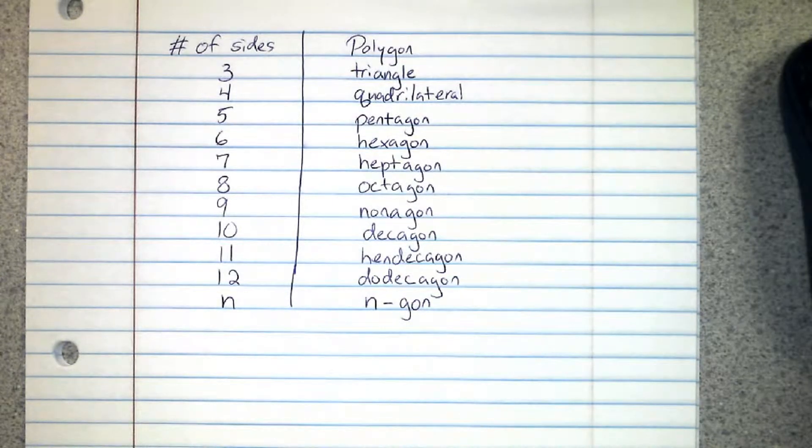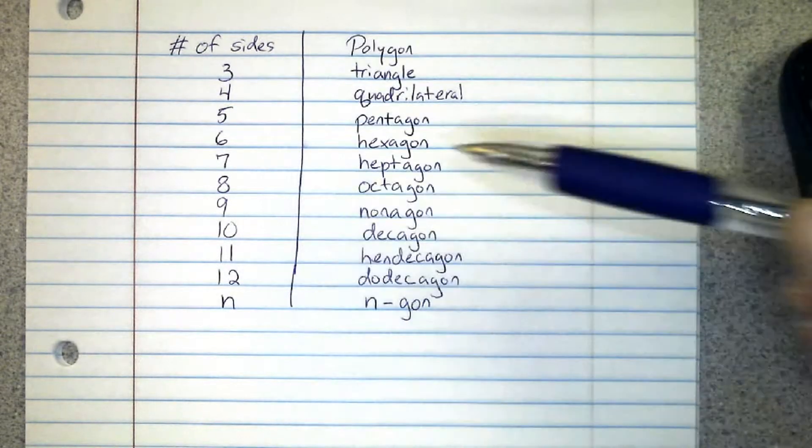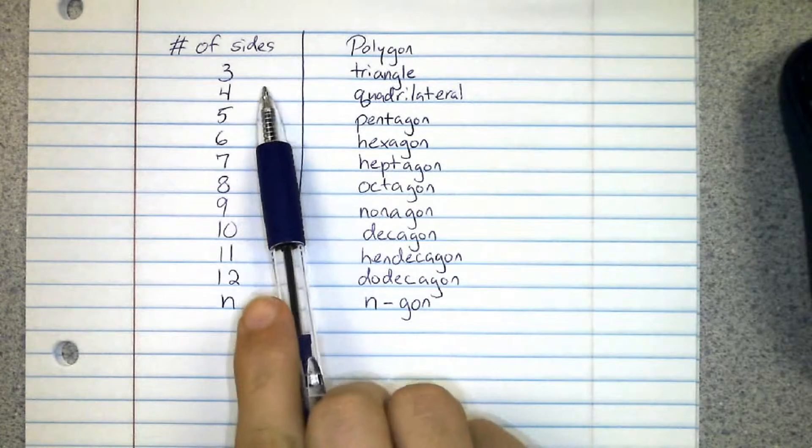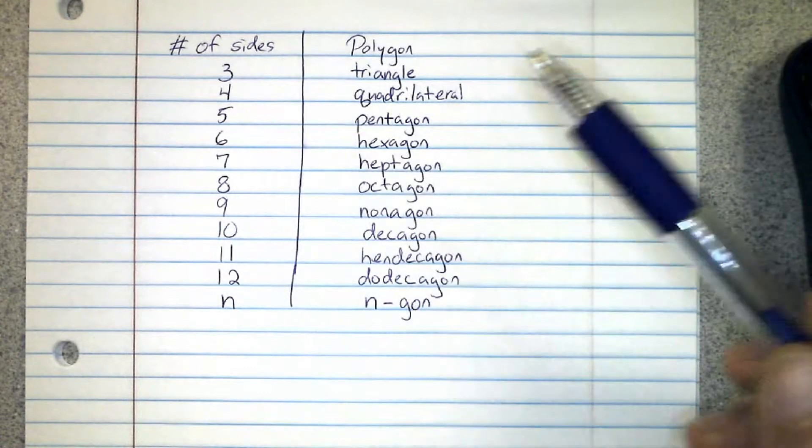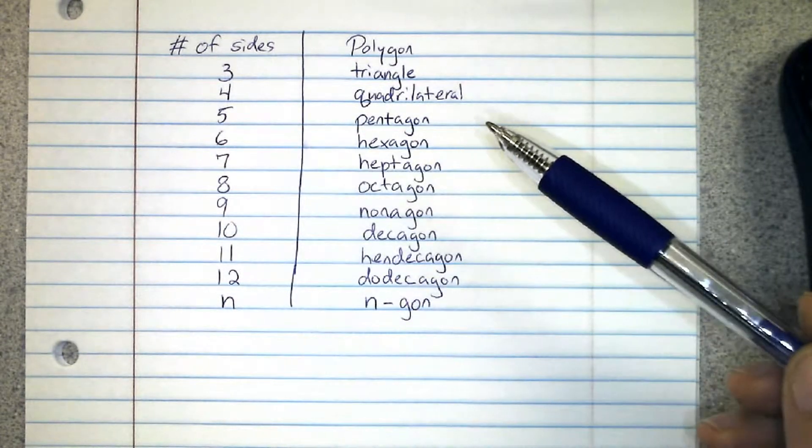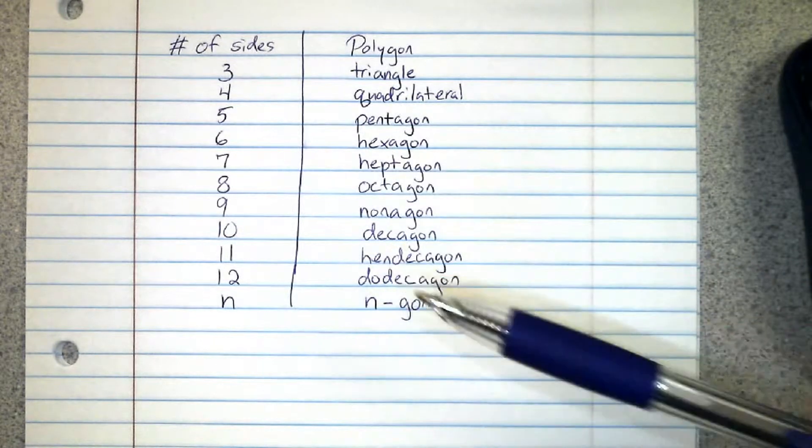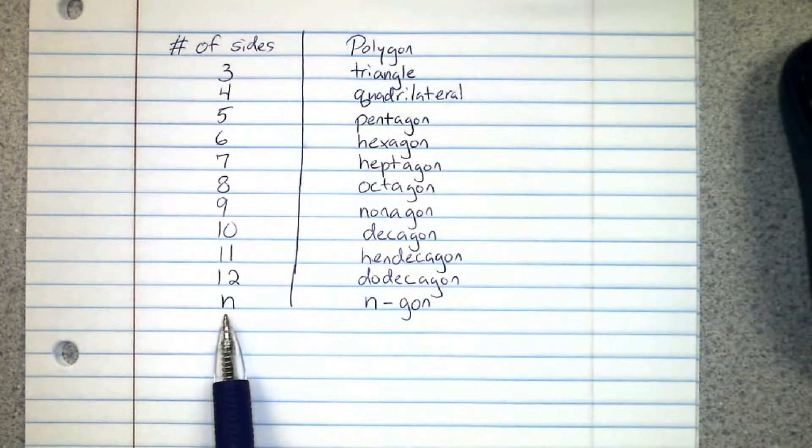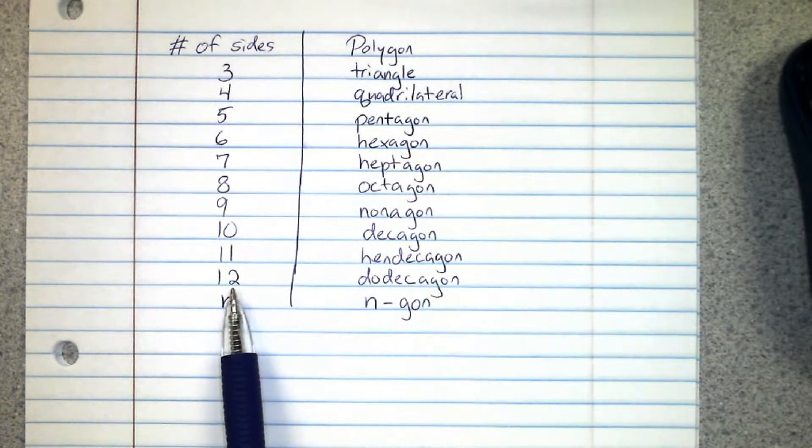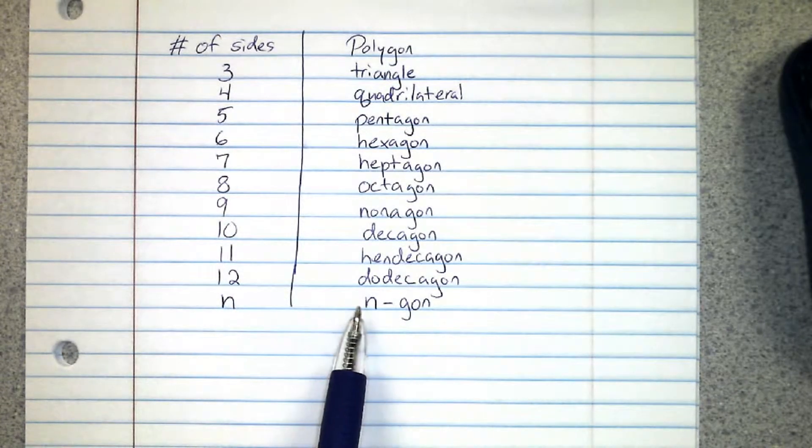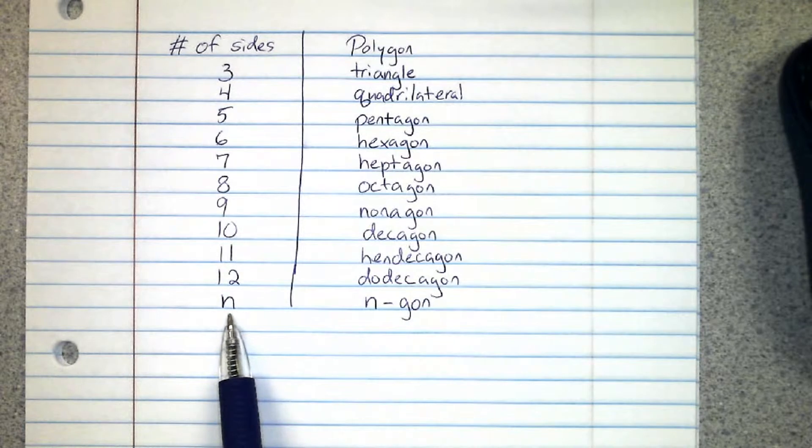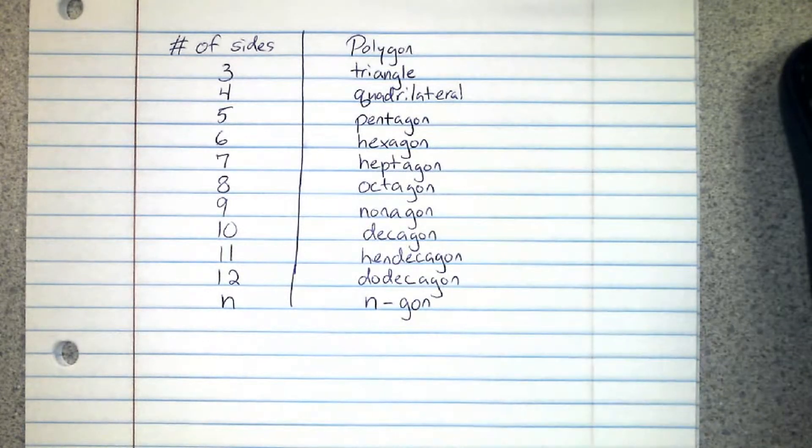In addition to classifying polygons as convex, concave, equilateral, equiangular, or regular, we can also classify them by the number of sides. We have a chart right here: three sides is a triangle, six sides is a hexagon, and so forth. At the very end is n-gon. Once you get beyond 12, you have 13 sides: 13-gon, 15 sides: 15-gon, and so forth.